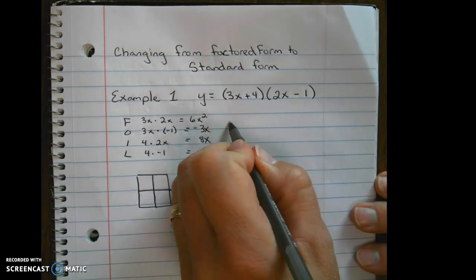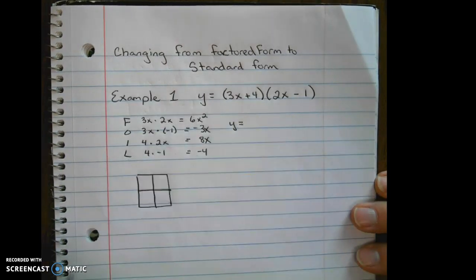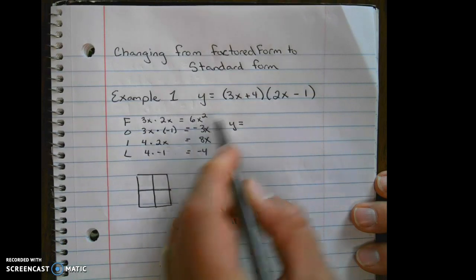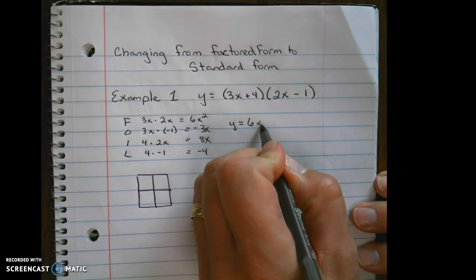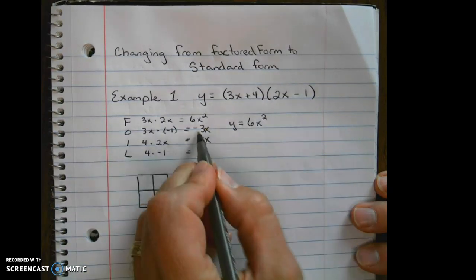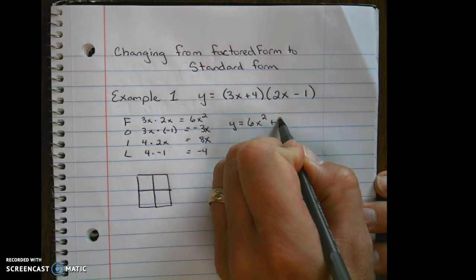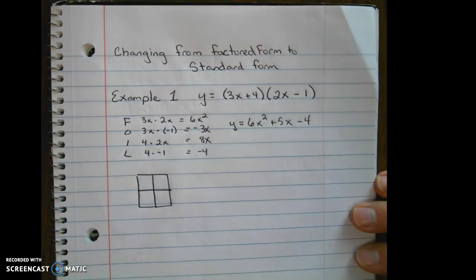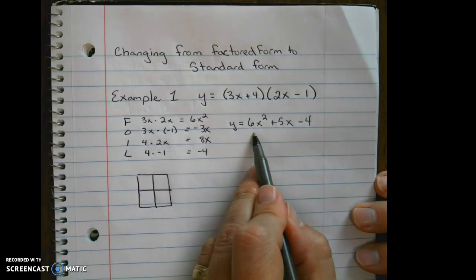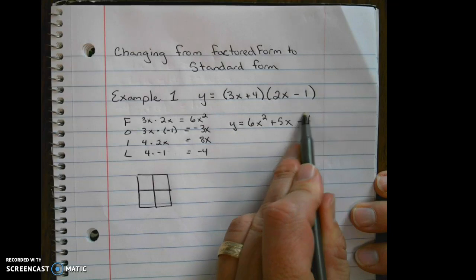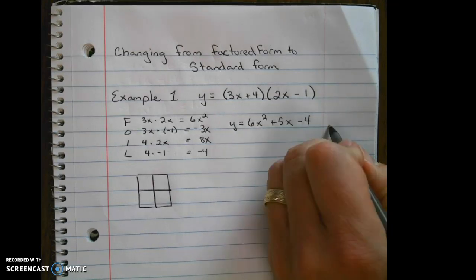Finally, we write our answer in standard form. We start with the term with the largest exponent. Then we combine these two, negative 3x and 8x makes 5x, and leave our constant on the end. One reason we may want to do this is to find the y-intercept. Remember that standard form gives us the y-intercept.